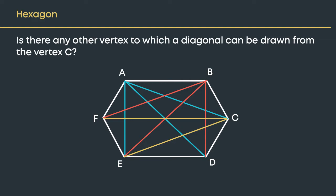Now let us go to vertex D. Already two diagonals have been drawn, so we need not draw them again. Now let us go to vertex E. All three diagonals have been drawn already. We can see here that from vertex F also, all three diagonals have been drawn.